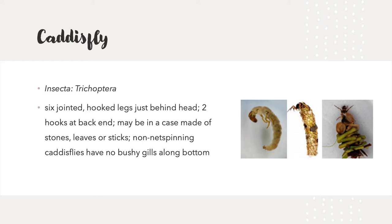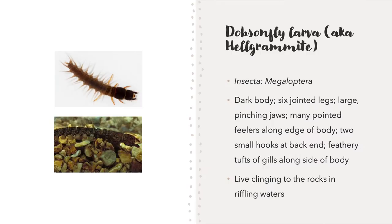Caddisflies have six jointed, hooked legs just behind the head, two hooks at the back end, and may be in a case made of stones, leaves, or sticks. The dobsonfly larvae, also known as hellgrammites, have a dark body with six jointed legs, large pinching claws, many pointed feelers along the edge of the body, two small hooks at the back end, feathery tufts of gills along the side of the body, and they live clinging to the rocks of riffling waters.